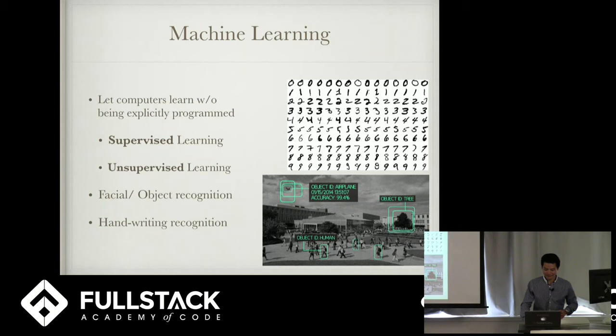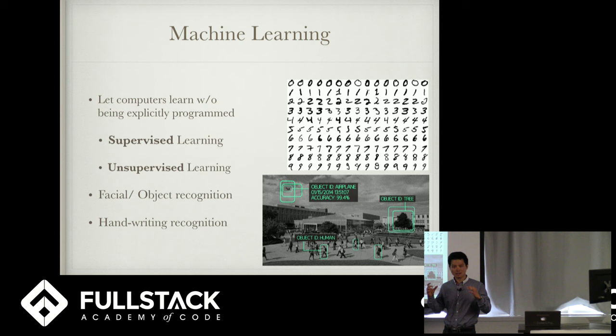So what is machine learning? Machine learning is a subset of computer science where you give your computer a program, and it's going to do things that are not explicitly programmed. There are two types of machine learning: supervised learning and unsupervised learning.